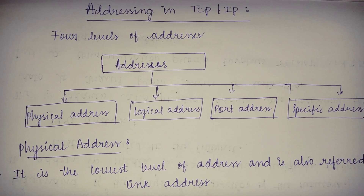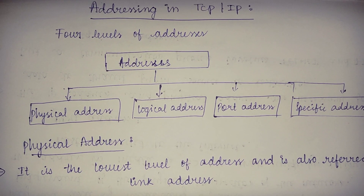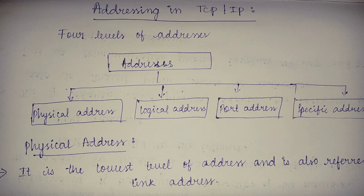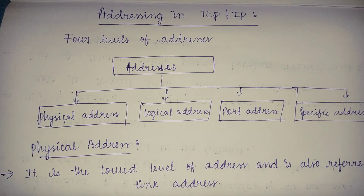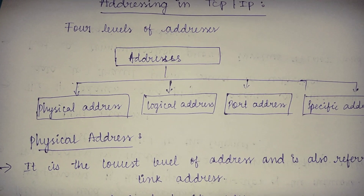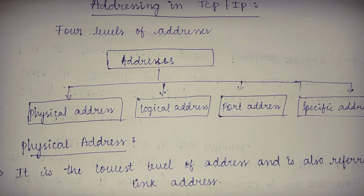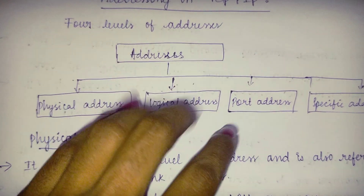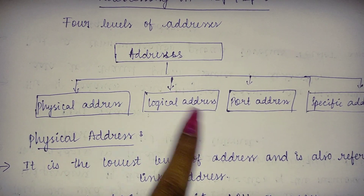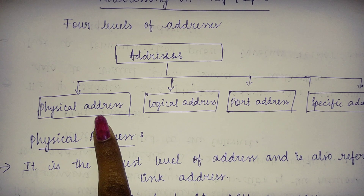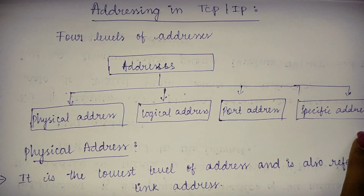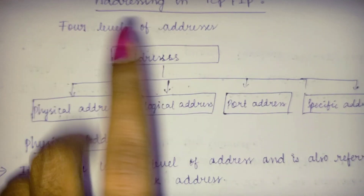Today we'll see addressing in TCP/IP. This is one of the important topics. There are four levels of addresses, divided into four types: physical address, logical address, port address, and specific address.